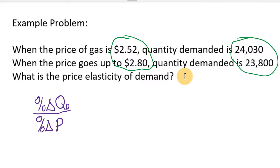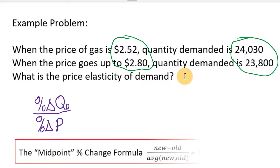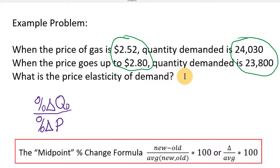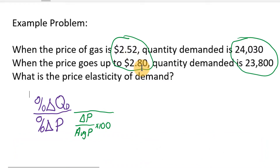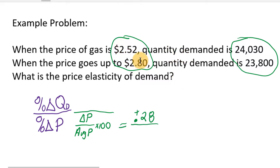I recommend you pause the video to try this yourself. We're using the midpoint formula: the change divided by the average. For percent change in price: take the change in price between the two values and divide by the average of the two prices, then multiply by 100. Going from $2.52 up to $2.80 is a positive change — an increase of 28 cents. The average price is $2.52 plus $2.80 divided by 2, which equals $2.66. So 28 cents divided by $2.66 times 100 gives approximately a 10.53 percent change in price.